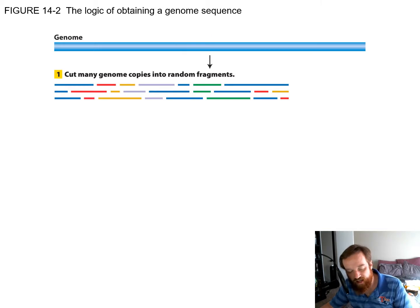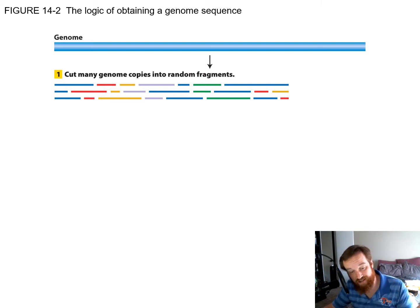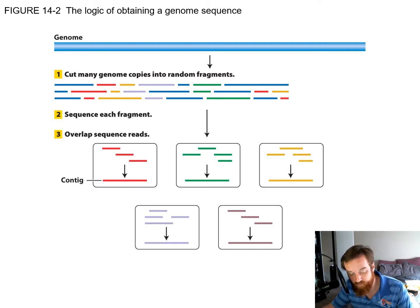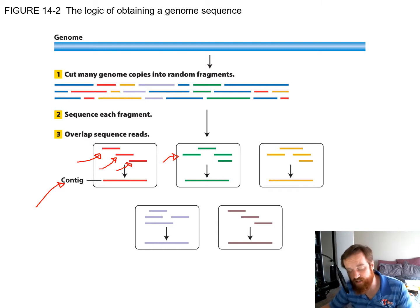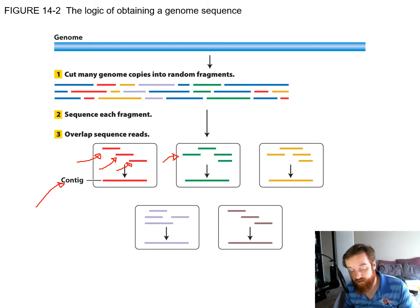The approach is to cut the genome into random fragments. You can do this physically through shearing with sonication or mechanical breaking, or through restriction enzymes that cut randomly. We then sequence each one of those individual fragments — the red fragments, the green fragments, etc. — and look for overlaps. When there are large overlaps, we construct what's called a contig, or contiguous sequence, which is a large chunk — bigger than one sequencing run.